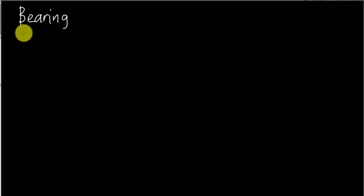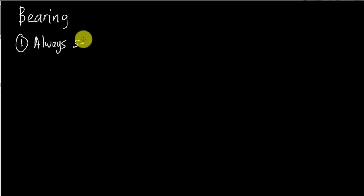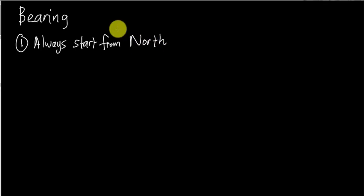For bearing, you need to know four key pieces of information. The first thing you must remember is that bearing always starts from north — always start from north. Whenever you want to find the angle of bearing, you always need to find where north is first.